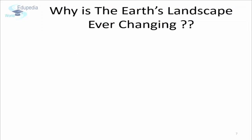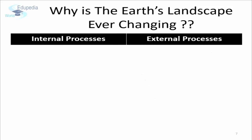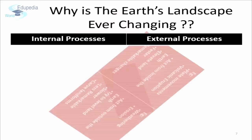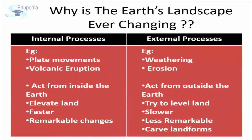The landscape of the earth is constantly being changed by two broad categories of processes: internal processes and external processes. Internal processes are the plate movements, volcanic eruptions, and earthquakes, whereas the external processes include weathering and erosion.